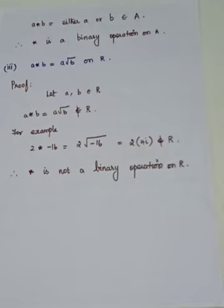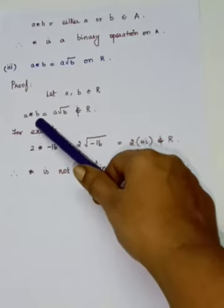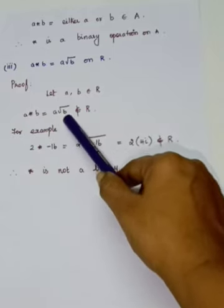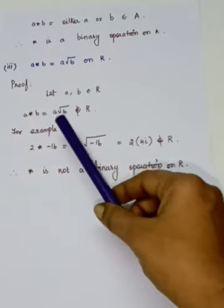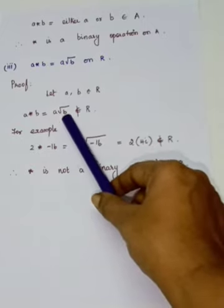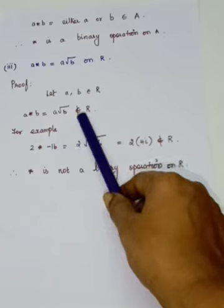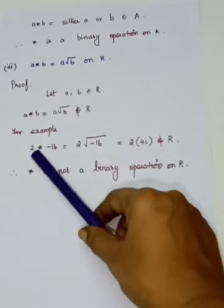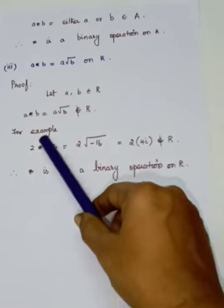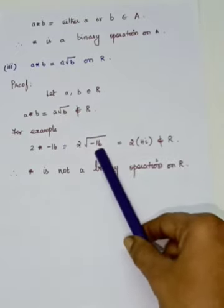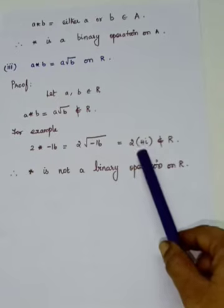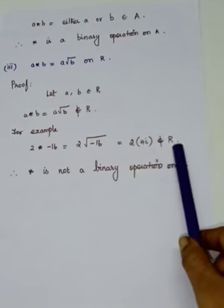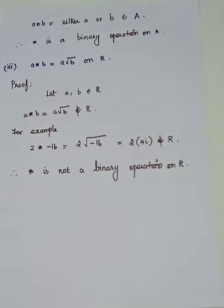Third: a asterisk b equals a times the square root of b, on R. Let a, b belong to R. If b is negative, the square root of b is not a real number. For example, take a equals 2 and b equals minus 16: the result is 2 times the square root of minus 16, which equals 8i — an imaginary number, not a real number. So a times root b does not belong to R. Therefore, asterisk is not a binary operation on R.